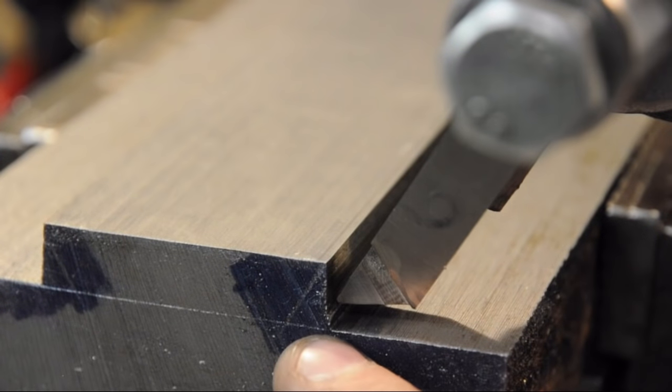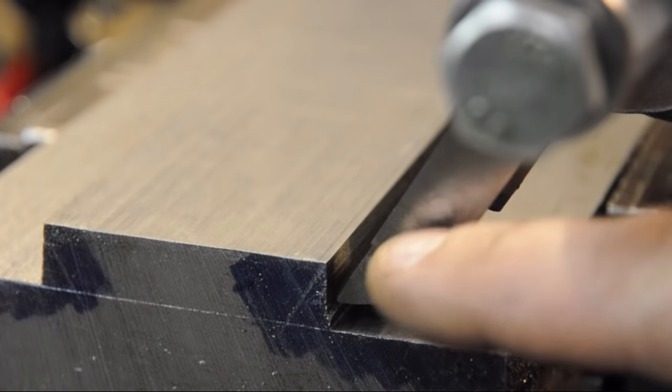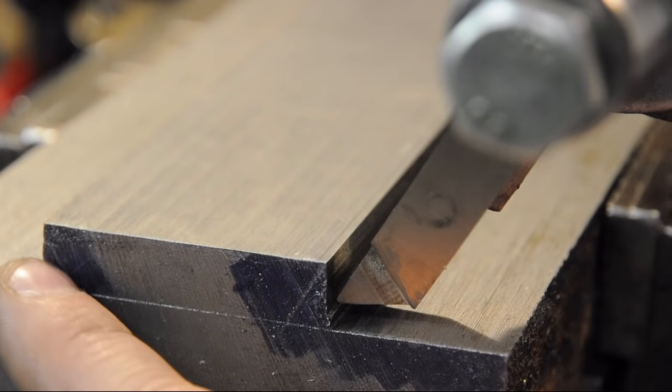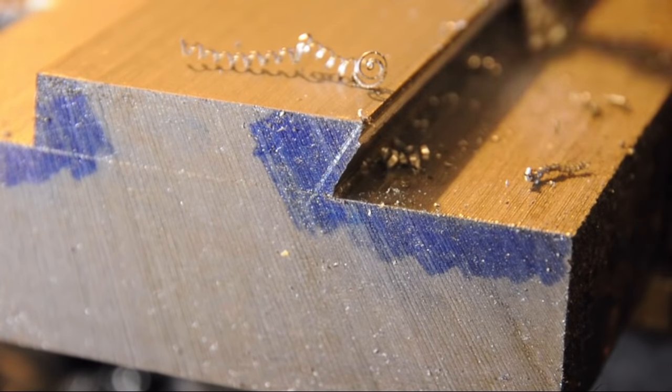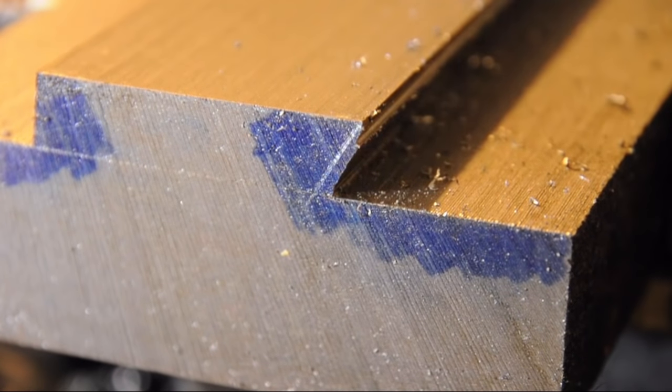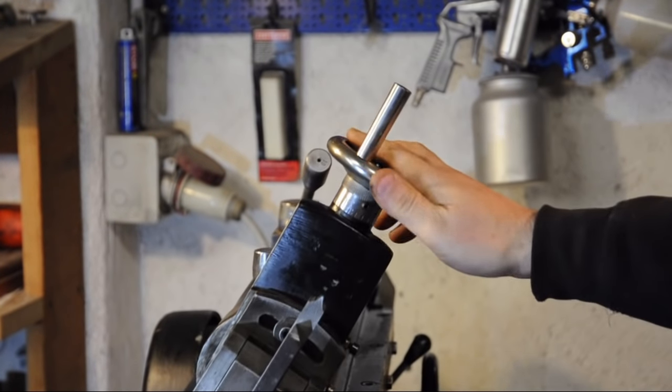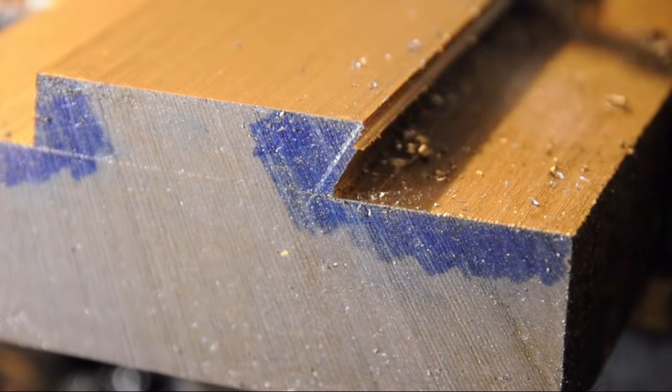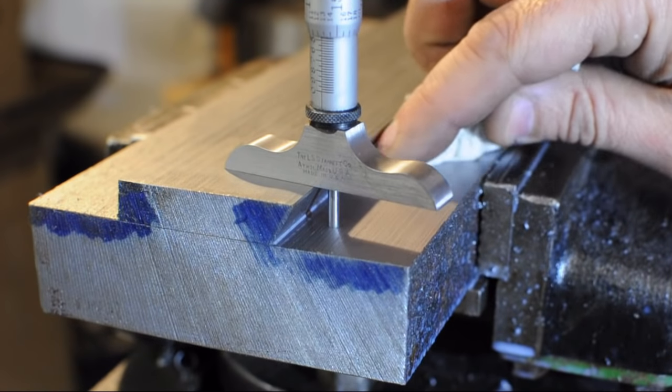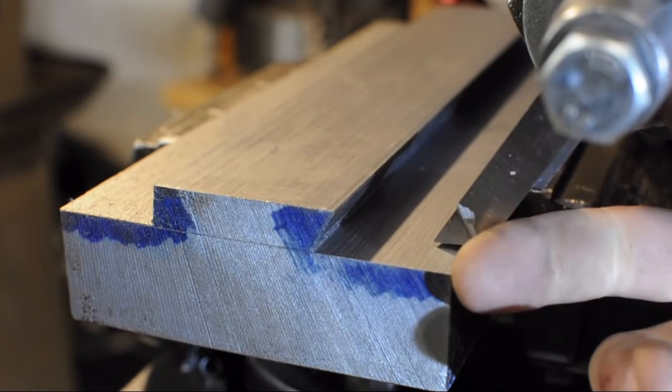This is going to be all manual operation with the top slide and the x-axis. I'm just going to nibble away until I get close, lock all the other axes except the top slide, and clean up that cut. I'm going to establish this dovetail first, and then we'll get into dovetail measurements and setting the location of the other side. That's one side cleaned up and taken to size.